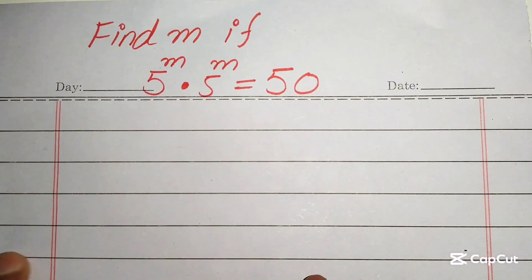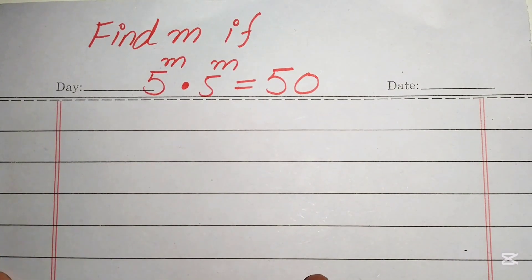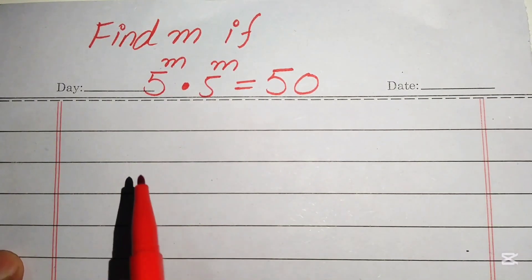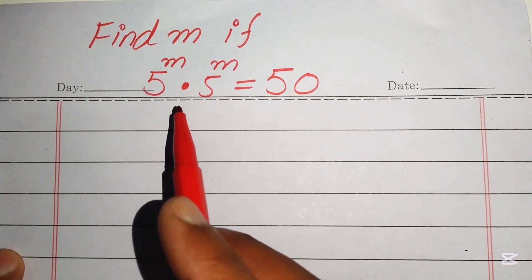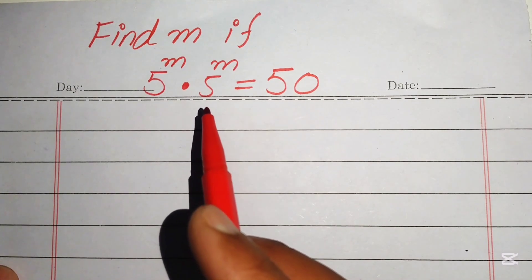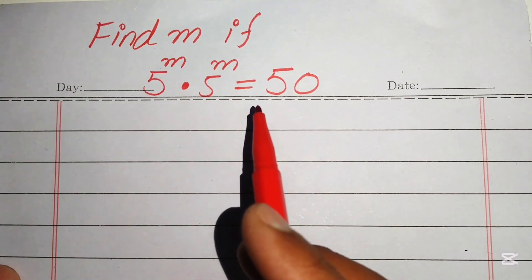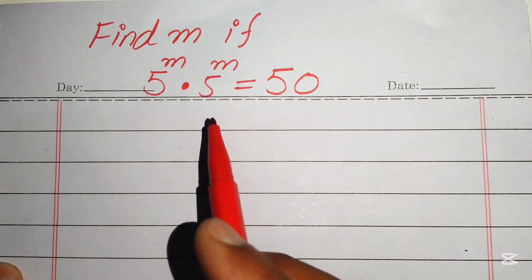Hello everyone, welcome. We'll solve this exponential equation: 5 to the power of m times 5 to the power of m equals 50, and we'll solve for the value of m.